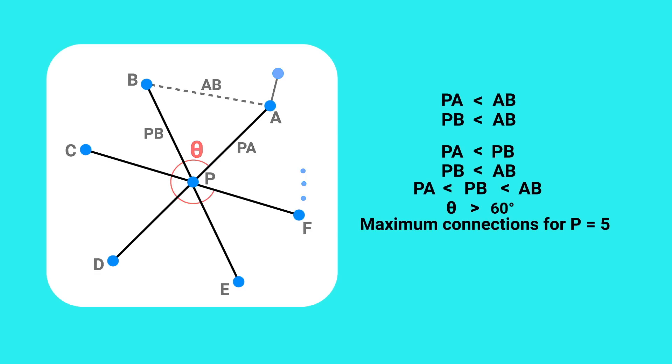If there were six connections, then either every angle would be exactly 60 degrees, or at least one would be less than 60. And either way, that's a contradiction. All of them must be greater than 60 degrees.